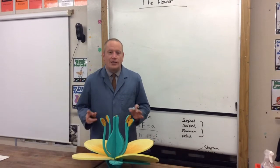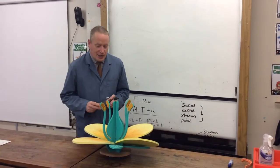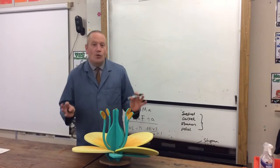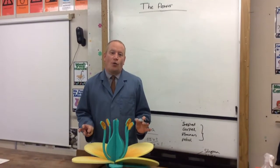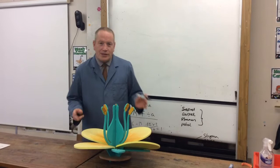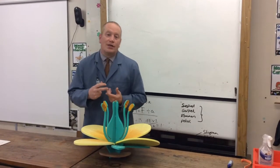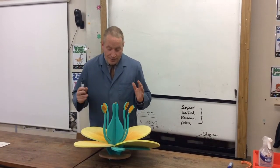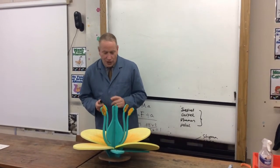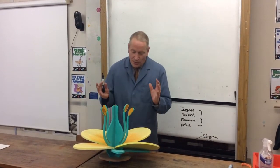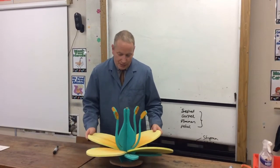What we're going to do now is look at the structure of the flower. The flower is the site of reproduction for the plant. Like the plant is made up of four different parts — the flower, the stem, the roots, and the leaves — the flower itself is also made up of four different major structures.